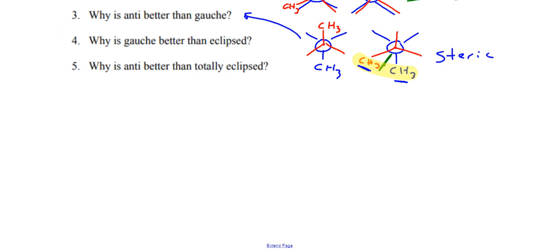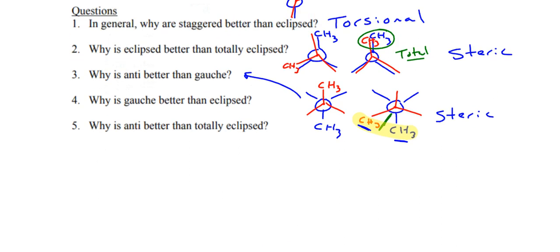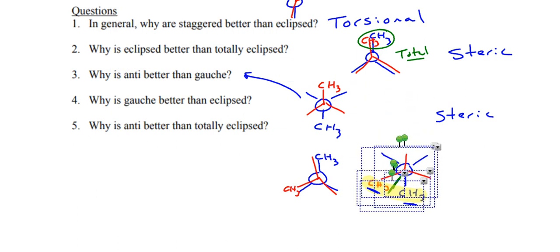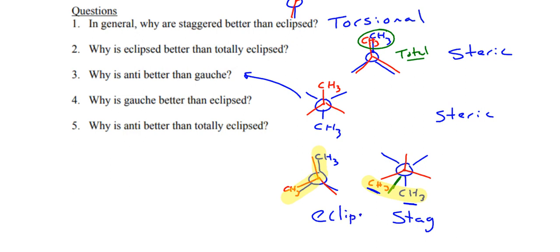Why is goosh better than eclipsed? Let's just say this is my eclipse and this is my goosh. The reason why is because you have this torsional strain, you're actually blocking it. This is an eclipse, this is a staggered still. So when you're comparing staggered to eclipsed, you're always talking about torsional.